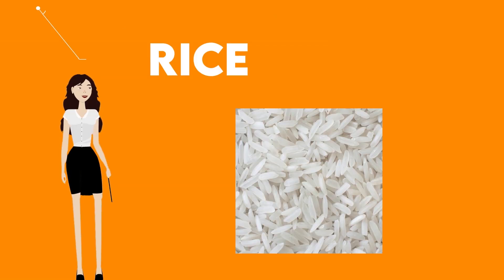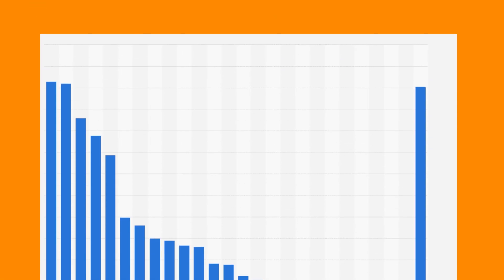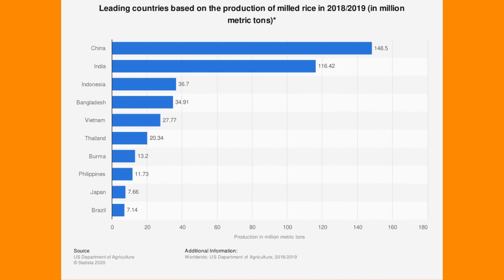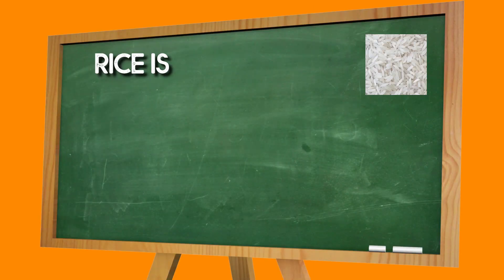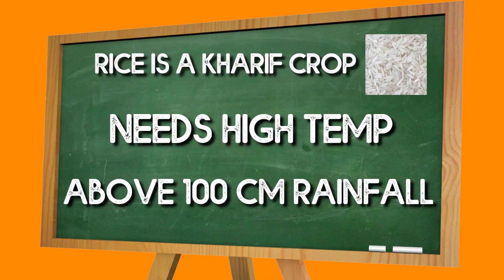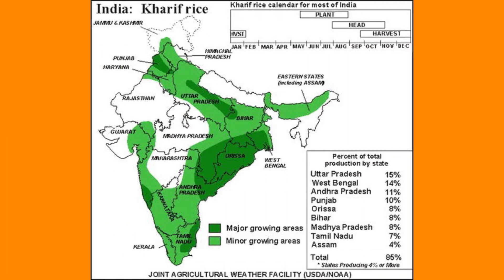Number 1 is Rice. The majority of the population in India consumes rice, and India is the second largest producer of rice. Rice is a Kharif crop that requires high temperature and above 100 cm of annual rainfall. It is mainly grown in Punjab, Haryana, Western Uttar Pradesh, and some parts of Rajasthan.